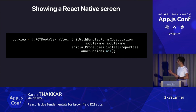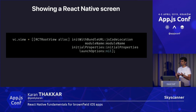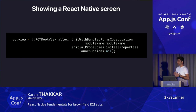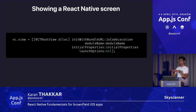Every instance of this view controller has a property called view, and this is the view that the view controller controls. When you want to show a React Native screen, you attach your React Native view to the view property of the view controller. RCTRootView init with bundle URL takes the JavaScript code location, the module name — which is the screen you want to show — and the initial properties, which are the props your component will have when it first renders. If you come from a web background, this line is essentially the same as element.innerHTML — you take some HTML code and replace the entire child hierarchy of an element with something new.